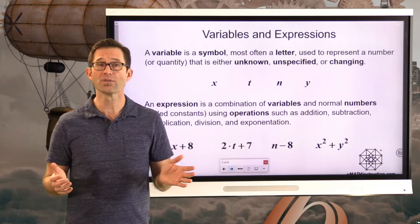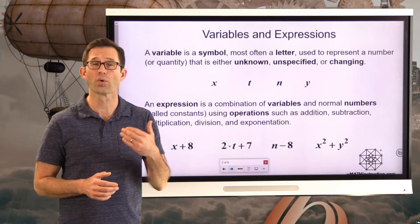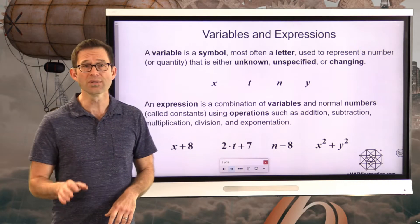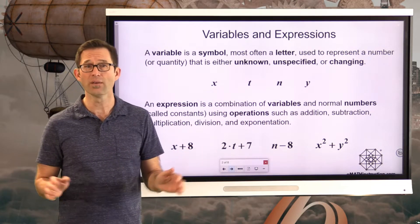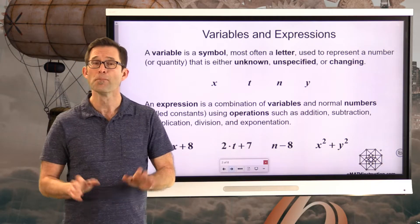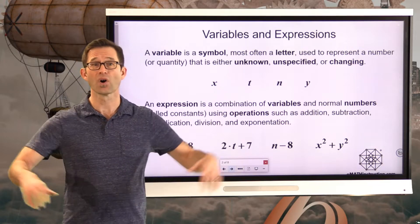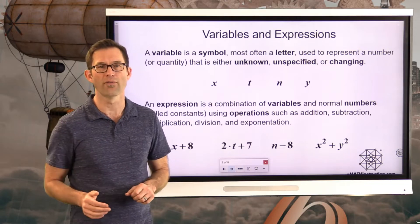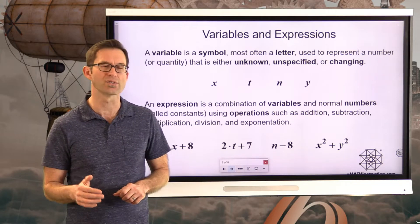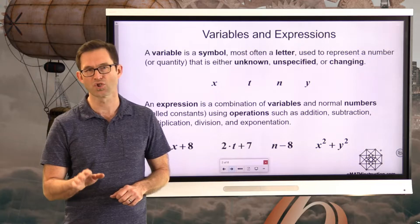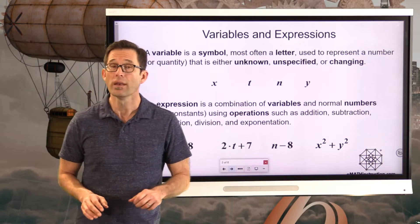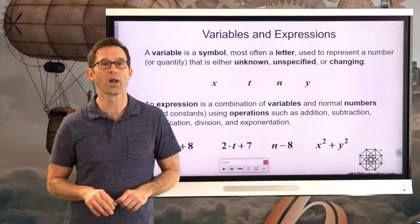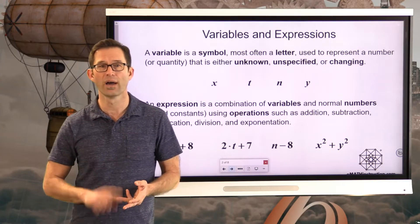Very often the letters we use for variables are letters towards the end of the alphabet, like X, T, N, Y. You will also see variables at the beginning of the alphabet — A, B, C, all of that. Sometimes we'll exhaust all 26 letters and go to the Greek alphabet, but you don't have to worry about that this year. A variable is just a letter used to stand for a number that's unknown, unspecified, or changing.